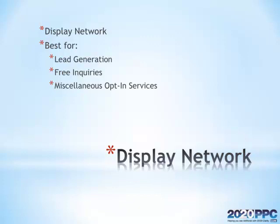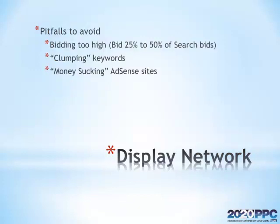With that said, there are a couple of things you want to avoid when working with the display network. You definitely want to make sure that you're not bidding too high — we'll cover more about how to pick your bids later in this video. I'll also talk about making sure to clump your keywords in a nicely, tightly organized ad group. Not doing that is going to give you a shotgun approach to advertising in the content network, and you don't want that. I'll also show you how to avoid money-sucking AdSense sites.